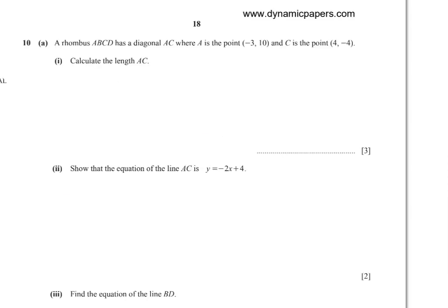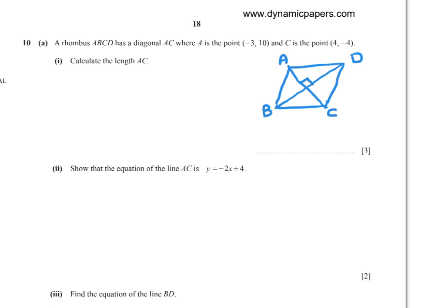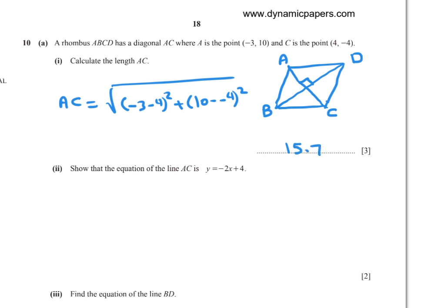Number 10(a): A rhombus ABCD has diagonal AC where A is the point (negative 3, 10) and C is the point (4, negative 4). Calculate the length of AC. Using the distance formula: AC equals square root of ((negative 3 minus 4) squared plus (10 minus negative 4) squared) equals 15.7 to 3 significant figures.